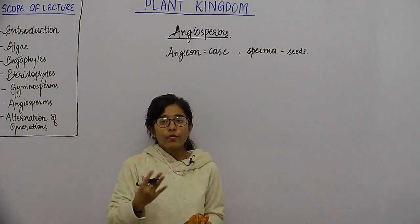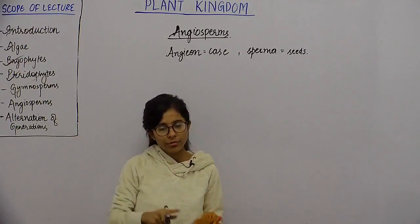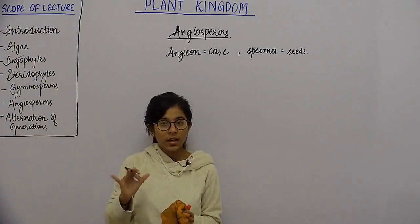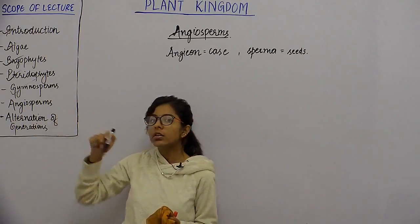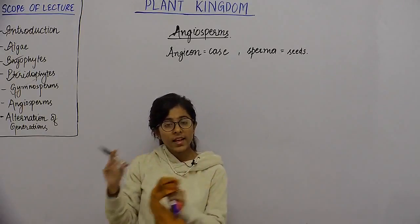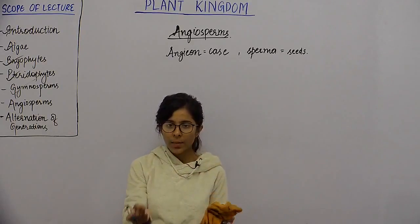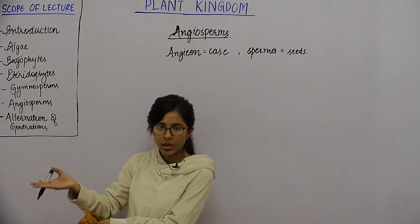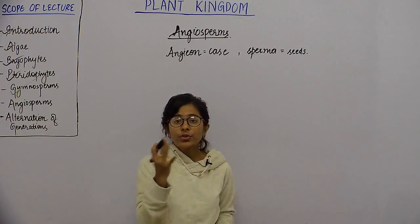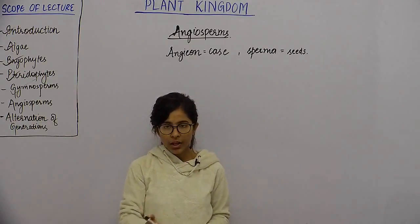Another important feature is the formation of an endosperm. Angiosperms undergo double fertilization, which does not occur in any other class of plants. The second product formed is the endosperm, which is present in the embryo and helps provide nutrition as the whole plant develops.